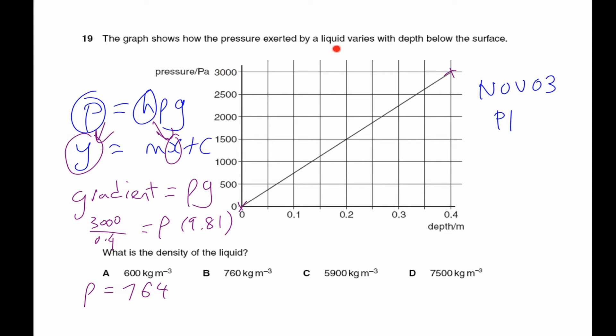The pressure due to the liquid is P equals ρgh. So if you plot P versus h, you'll notice that if you compare with y equals mx plus c, the pressure is the y-axis, h is your x-axis, so the gradient here will be equals to ρg and the y-intercept is zero. That's why it's passing through the origin.